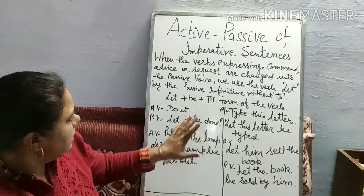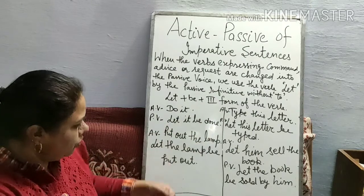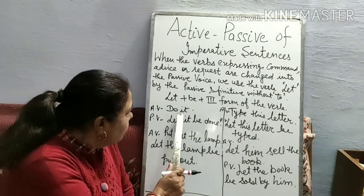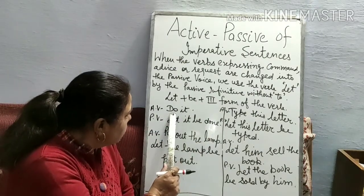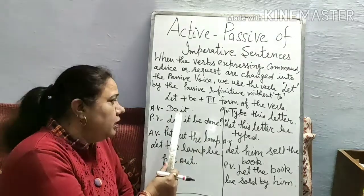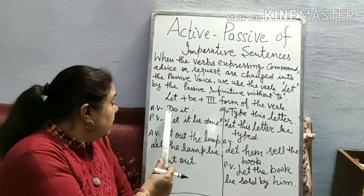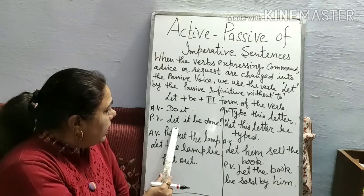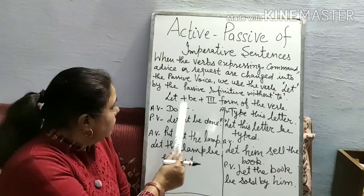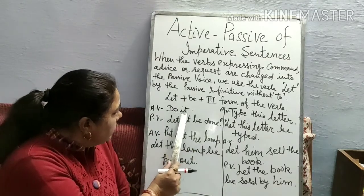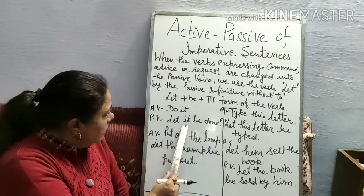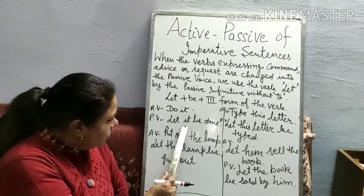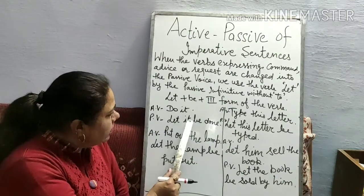Active voice: 'Do it.' This is a small sentence. When we change it into passive voice, we start with 'let it' — because 'it' is the object, it will change into the subject position. So the passive voice becomes: 'Let it be done.'